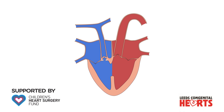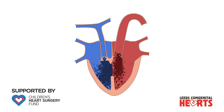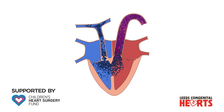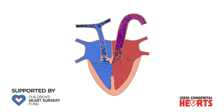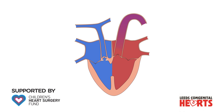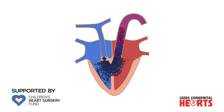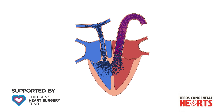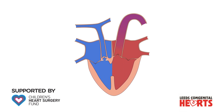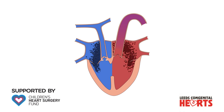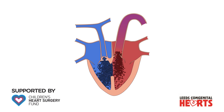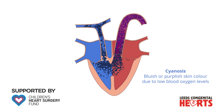The bluer blood that contains lower levels of oxygen mixes with the redder blood that contains higher levels of oxygen that is being pumped from the left ventricle to the aorta and to the body. This causes the person's oxygen levels to be lower than normal. This lower level of oxygen causes their skin to be slightly blue in colour, and this is called cyanosis.